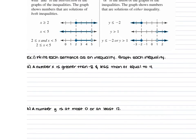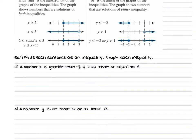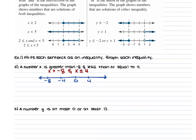In Example 1, we're writing each sentence as an inequality and graphing it. For part A, it says a number x is greater than negative 8 and less than or equal to 4. So x is greater than negative 8 and x is less than or equal to 4. On our number line, since it is an AND statement, we're going to have an open circle on negative 8.